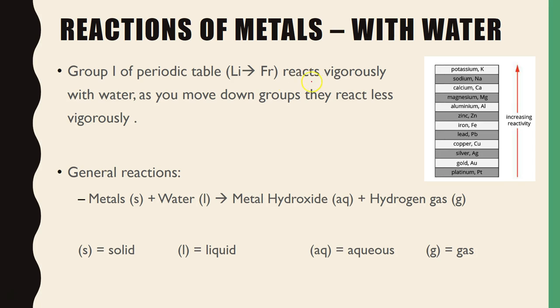So as I mentioned, group 1 reacts vigorously. As you move down, they react less. So you can see here increasing reactivity, you have sodium and potassium at the top, and then we have platinum and gold, which is further away to the right of the periodic table.